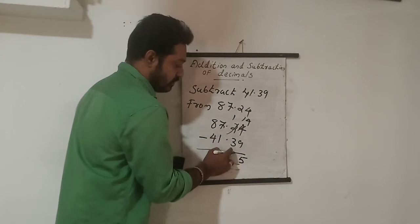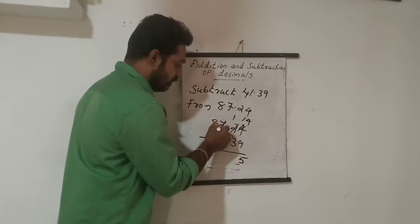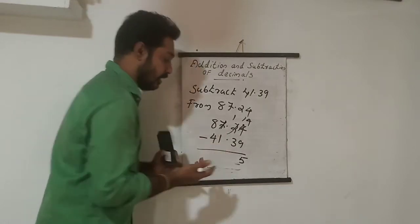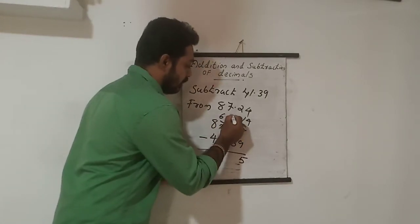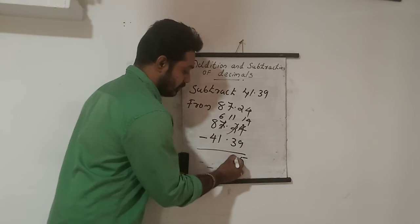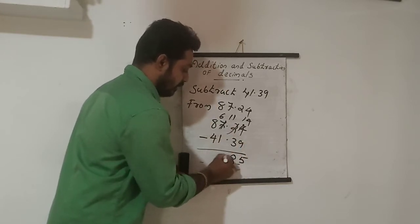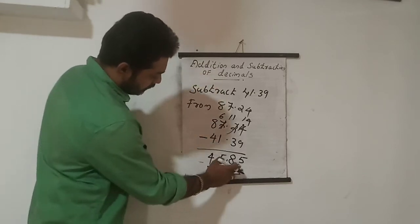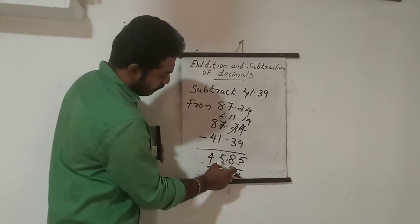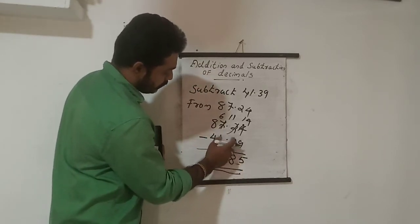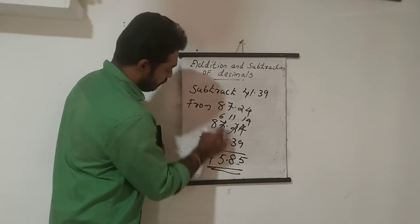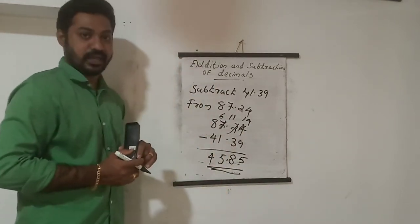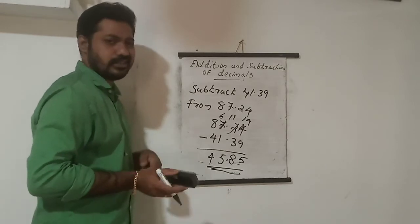Then 1 minus 3 is not possible, so we borrow again. This becomes 6 and this becomes 11 minus 3 is 8. Then 6 minus 1 is 5, and 8 minus 4 is 4. So the answer is 45.85.